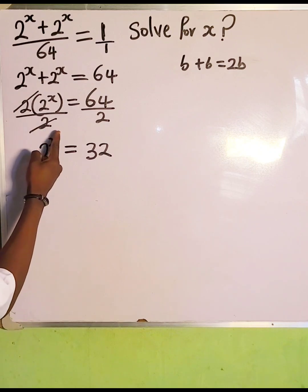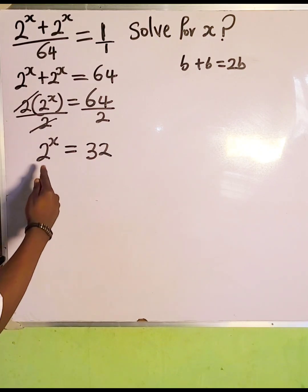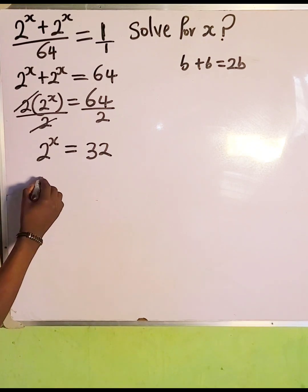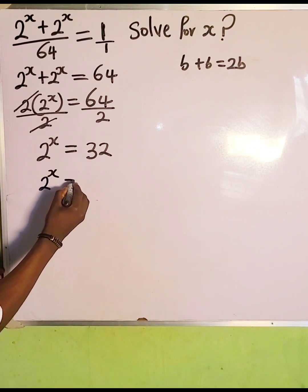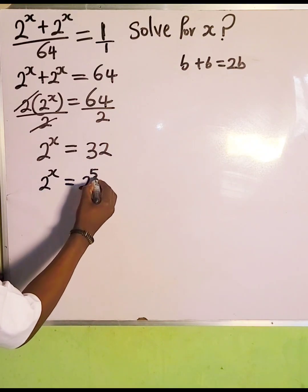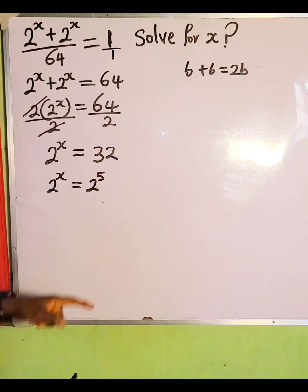Now the variable we are looking for appears as an exponent. We need to try to make the base the same. So 2 and 32 can be easily converted to base 2. So here we have 2 to the power of x equal to 32 in base 2, which is going to be 2 raised to the power of 5, because when we multiply 2 by itself 5 times, it's going to give us 32.